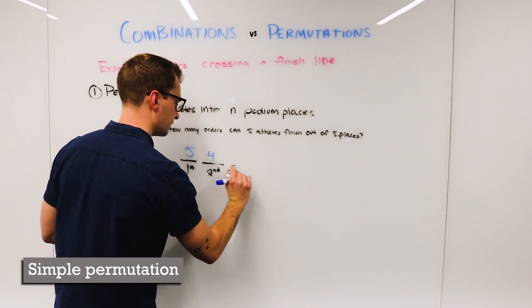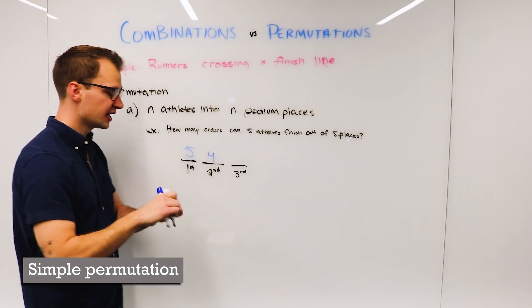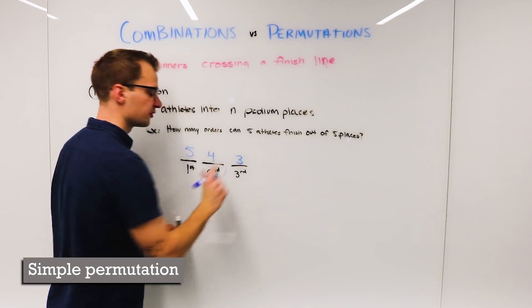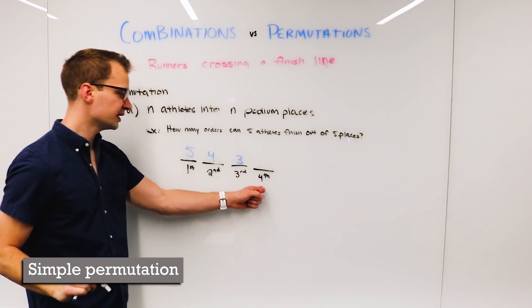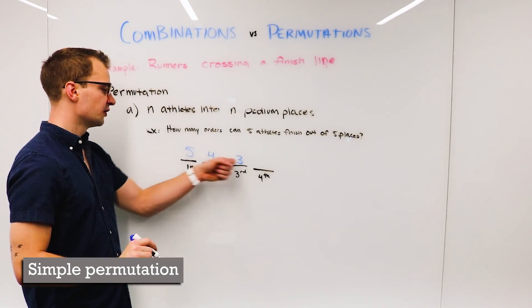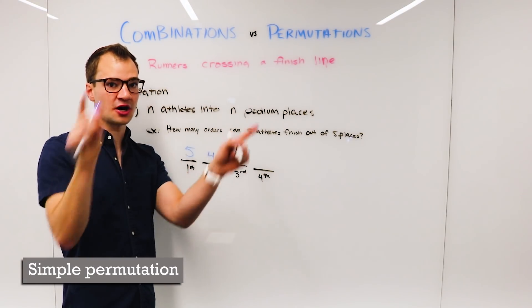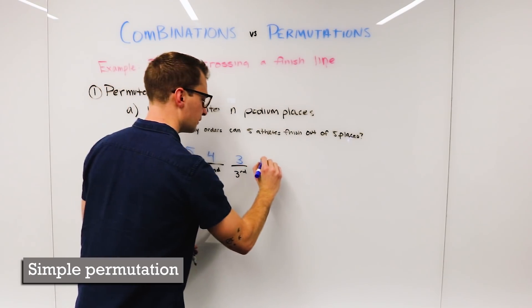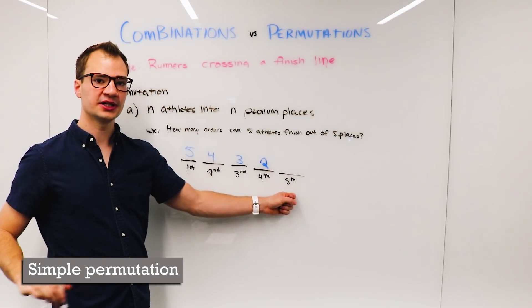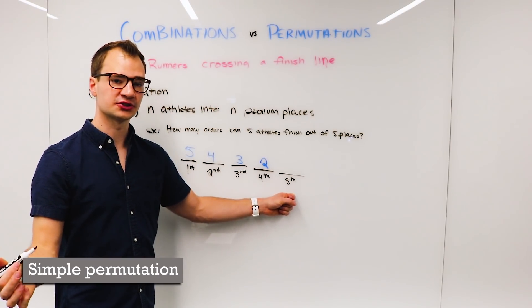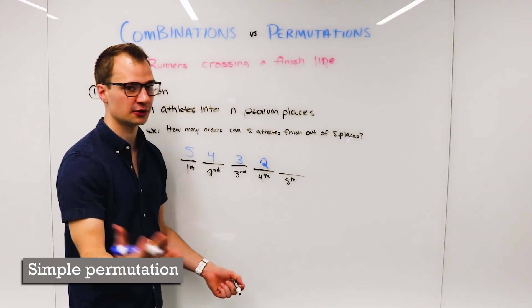Likewise, for third place there's only three athletes back on the track, and so we only have three possible orders. For fourth place there are two athletes still on the track, so either one of those could come in fourth place. And finally in fifth place, there's only one person still on the track, and so there's only one possible arrangement that somebody could come in fifth place out of those who are left.